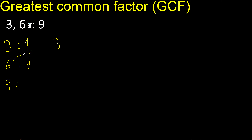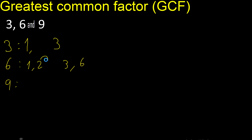6 divided by 1 is 6. Next, 6 divided by 2 is 3. Next 3, 3 is here.